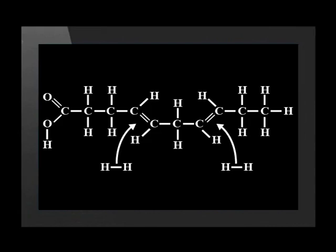This margarine says that it contains hydrogenated vegetable oil. What could this mean? Simply put, this means that hydrogen molecules have been added to the unsaturated sunflower oil and the product is a saturated oil. This is how margarine is made.